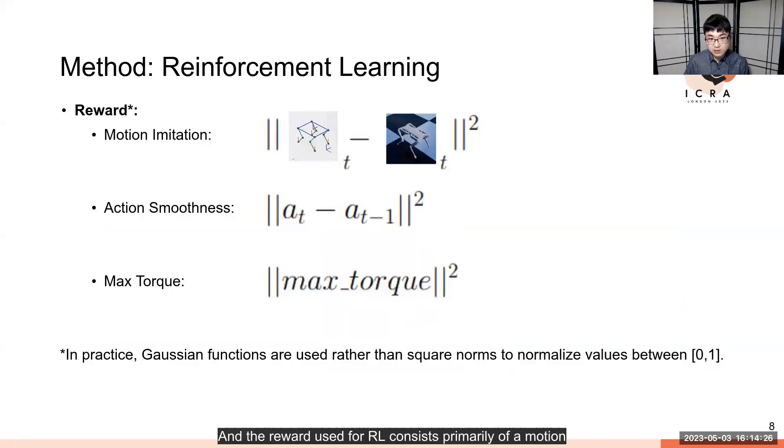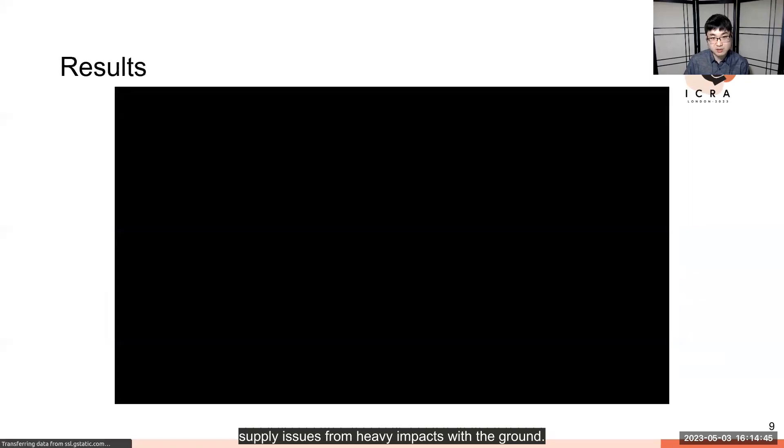The reward used for RL consists primarily of a motion imitation term, but also some regularization terms such as action smoothness, which prevents vibrations we observed on the robot, as well as a max torque reward to prevent high peak currents from causing power supply issues from heavy impacts with the ground.